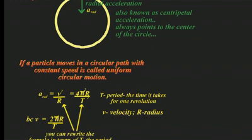Just in case you forgot, the period is the time it takes for one full revolution. And velocity and radius are the other variables in this equation.